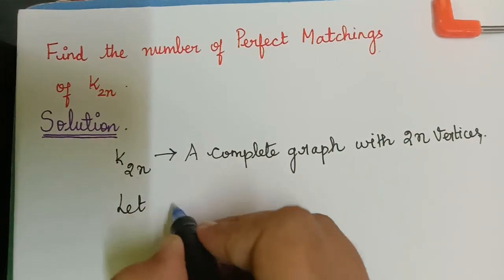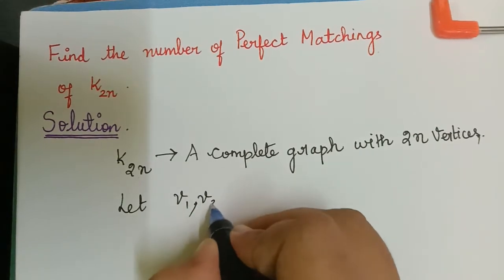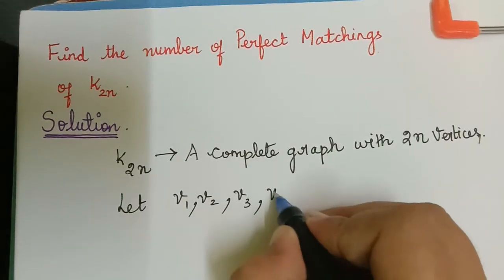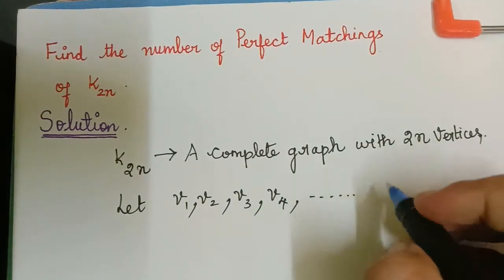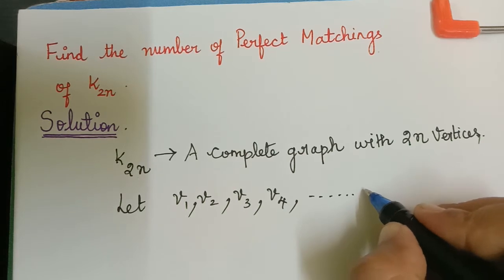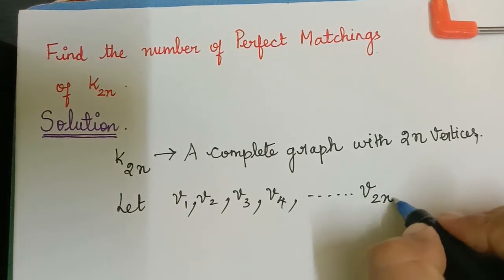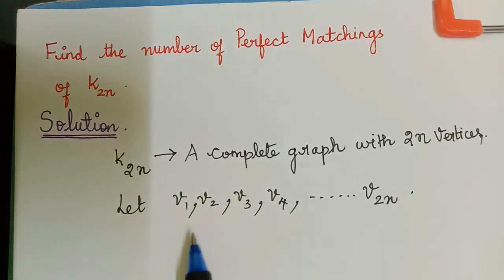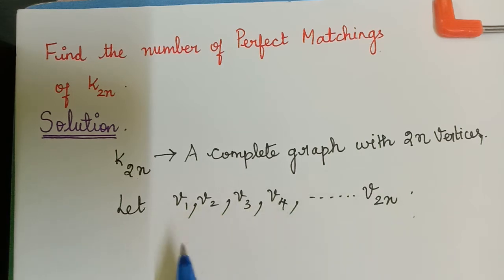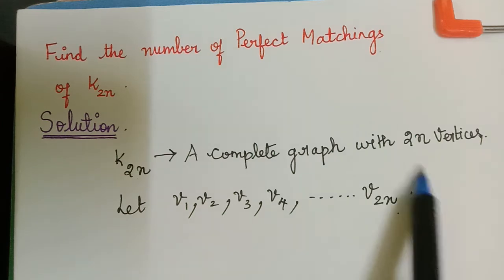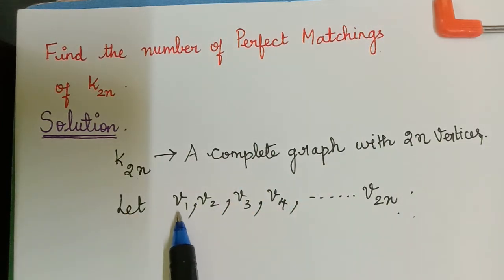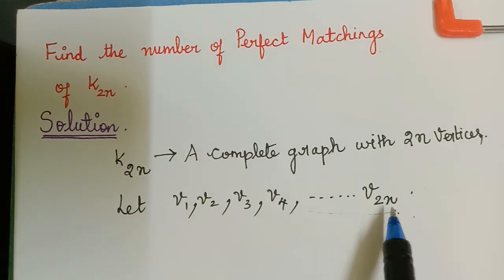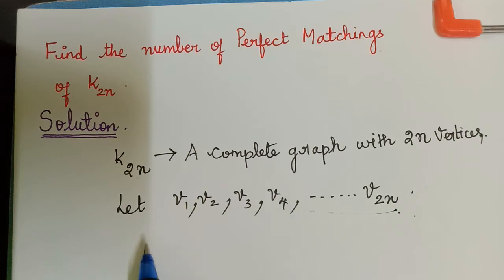Let the vertices be v1, v2, v3, v4, and so on up to v2n. Now, because K₂ₙ is a complete graph, if we consider any pair of vertices from this set, they will be adjacent to one another. So v1 will be adjacent to all the remaining vertices — there are totally 2n vertices, so v1 is adjacent to 2n minus 1 remaining vertices.